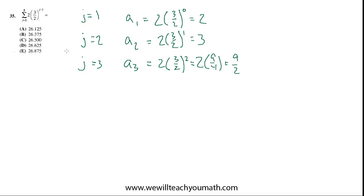j equals four. Now we're finding a four. We have two times three halves to the third, which is two times 27 over eight, which is actually 27 over two, isn't it? So that's 27 over four, ultimately.